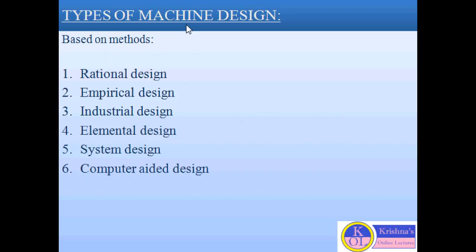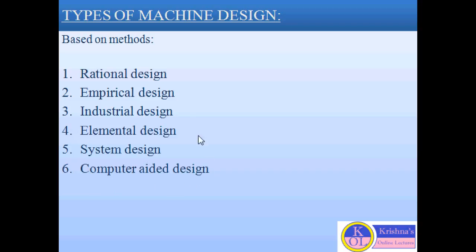We can also classify machine design on the basis of method. Based on method, the types of machine design are: first, rational design; second, empirical design; third, industrial design; fourth, elemental design; fifth, system design; and sixth, computer-aided design.